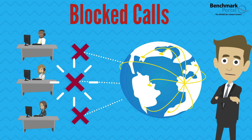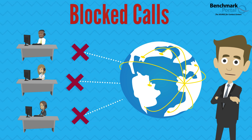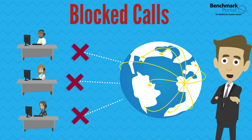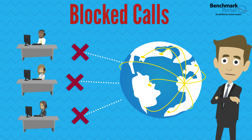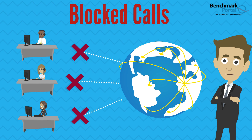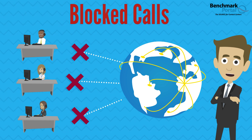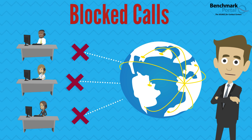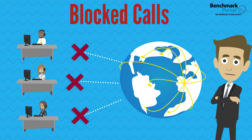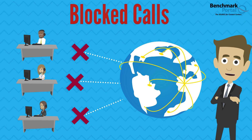A quick word on an old metric: blocked calls. These are calls that hit a busy signal and never get admitted to the ACD. Busy signals are, of course, big dissatisfiers, and the cost of telephone lines is now so low in most countries that it's rarely a problem these days. To find out if you have blocked calls, you should check with your telephony supplier. It's a good idea to get this information, if only to confirm that all calls offered to you are indeed getting through.